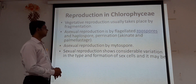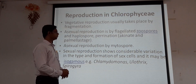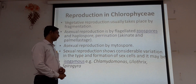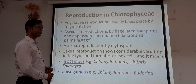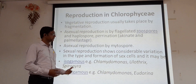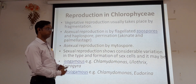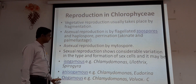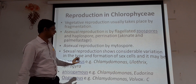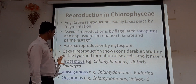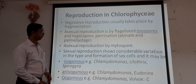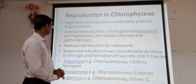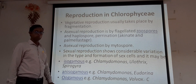Sexual reproduction shows considerable variation in the type and formation of sex cells. It may be isogamous — observed in Chlamydomonas, Ulothrix, and Spirogyra — or anisogamous, also observed in Chlamydomonas and Ulothrix. The third type is oogamous, also observed in Chlamydomonas. Chlamydomonas shows all three types of sexual reproduction: isogamous, anisogamous, and oogamous.